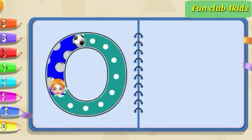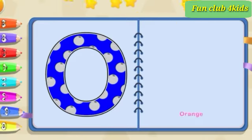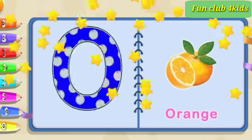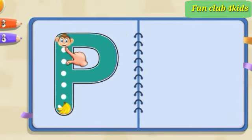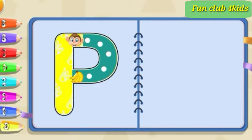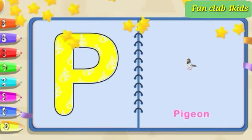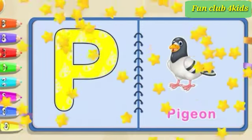Pull back, around and close. O is for orange. Pull down, go to the top, and around. P is for pigeon.